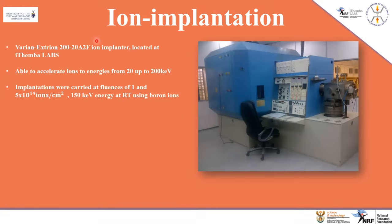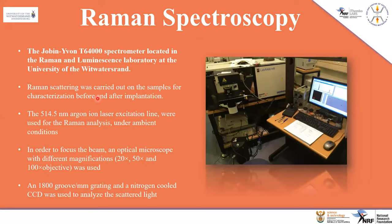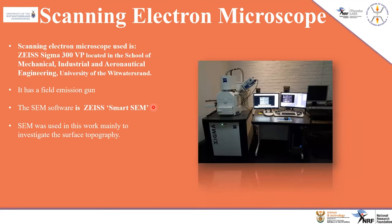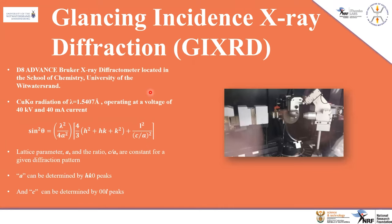Experiments were run at 900°C, 1000°C, and 1100°C for one hour. Ion implantation was performed using the Varian Extrion ion implanter at Timber Labs. Implantations were carried out using fluences of 1 and 5 times 10¹⁴ ions per cm² at 150 keV, at room temperature. Raman analysis was taken before and after ion implantation. A scanning electron microscope was used to determine surface topography, and grazing incidence was used for XRD analysis.